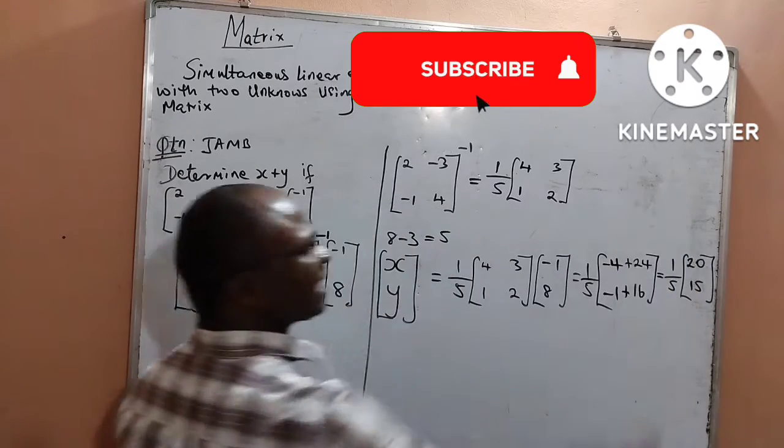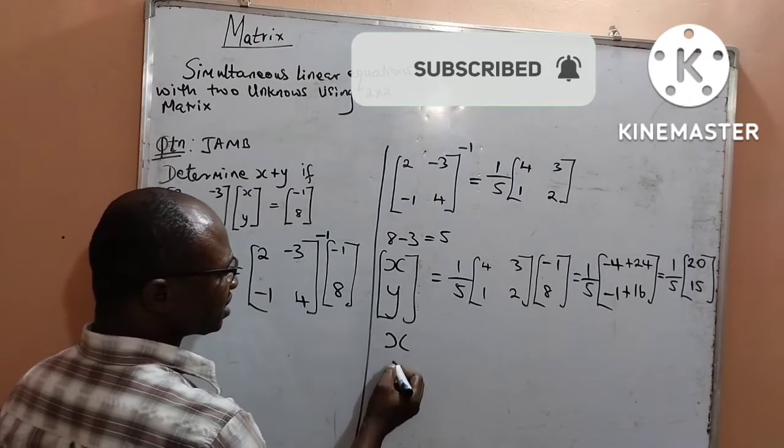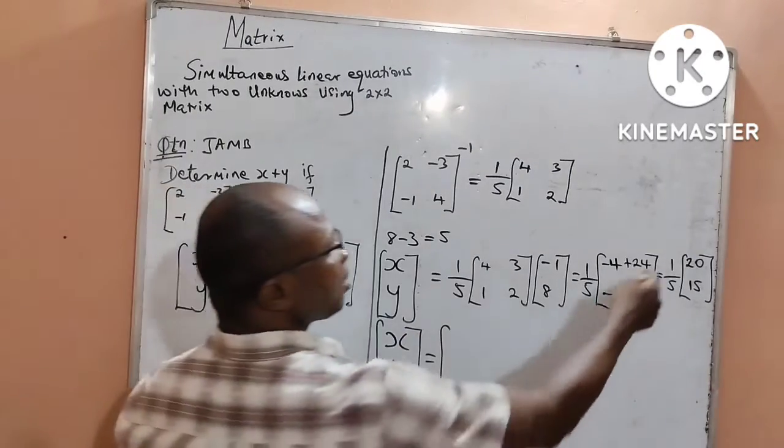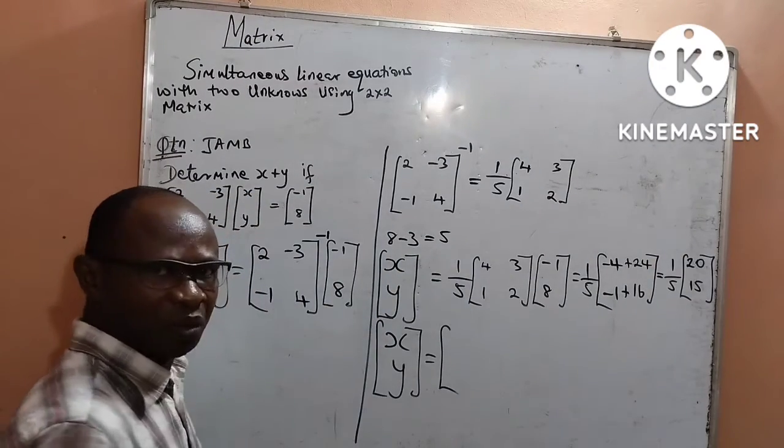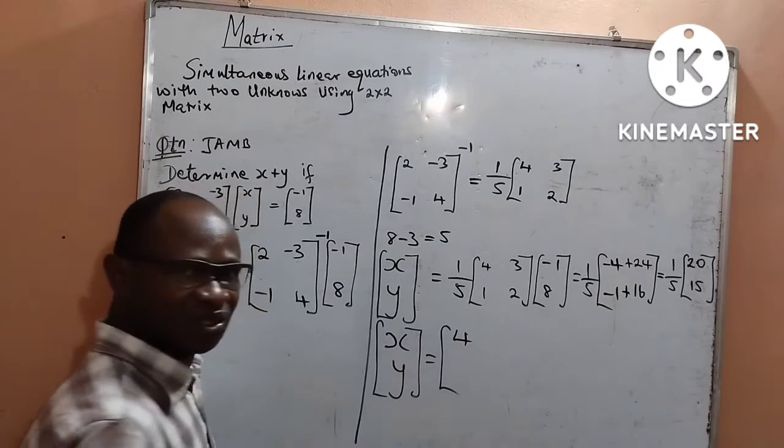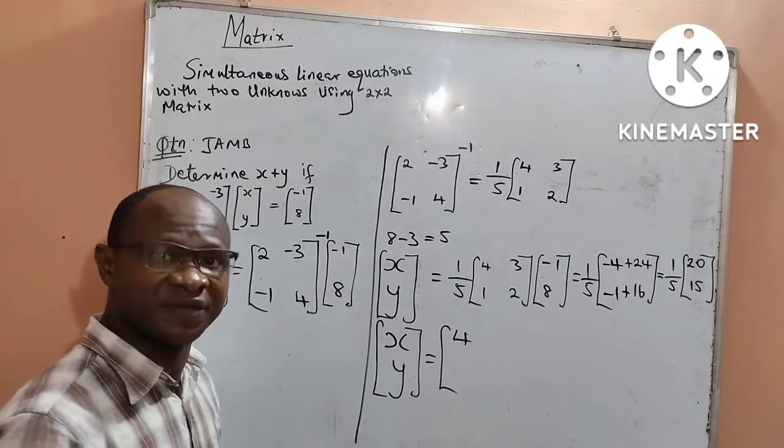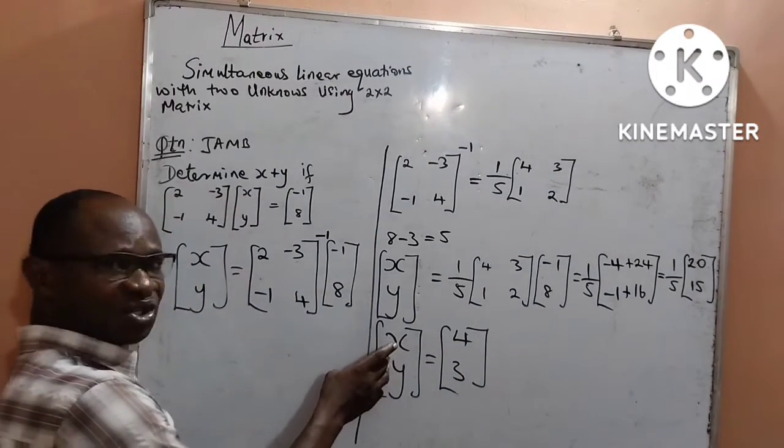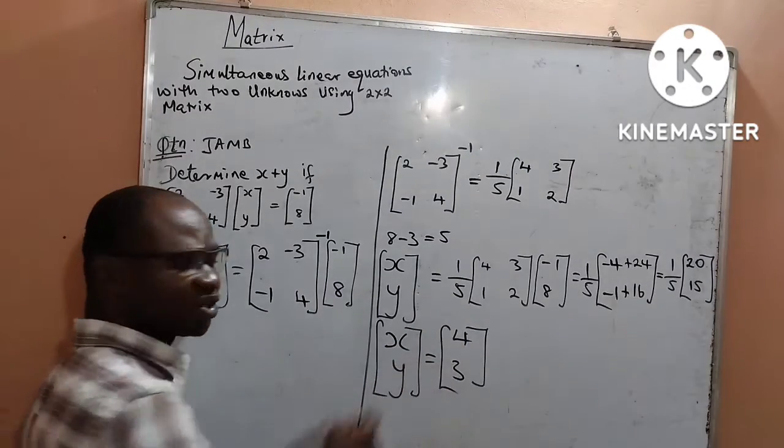I can now use the scalar value to multiply into that. Therefore, my [x; y] which I am looking for can now be 1 over 5 times 20 will give me 4, which is the same as 20 divided by 5. Next, 1 over 5 times 15 will give me 3, which is the same as 15 divided by 5. We can now see from this that the value of x is equal to 4 and the value of y is equal to 3.